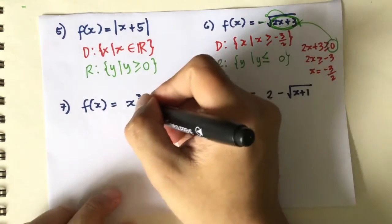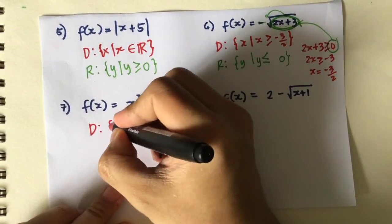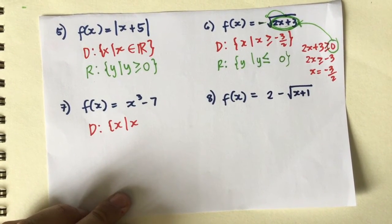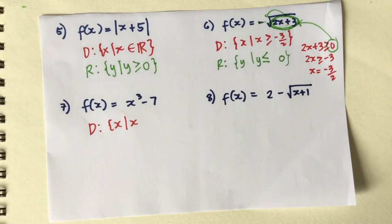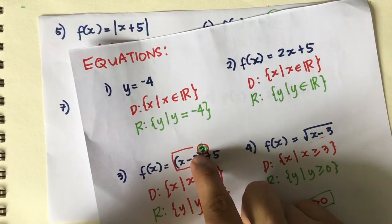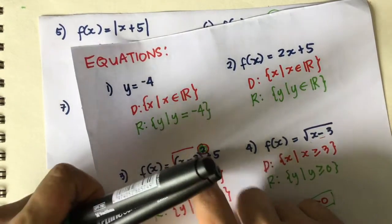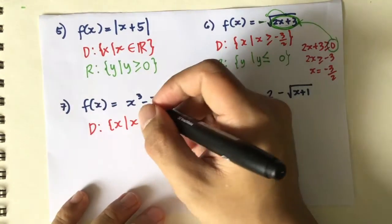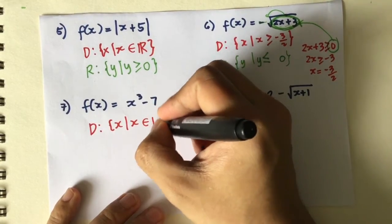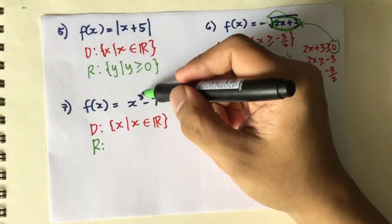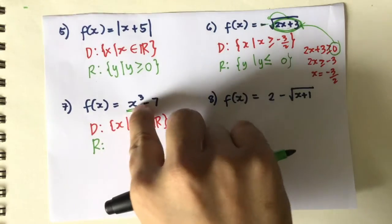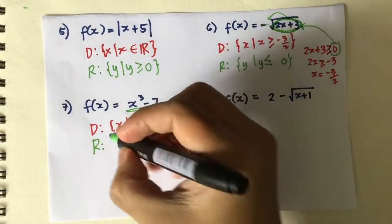Number 7 is x cubed minus 7. The first question: are you allowed to use any values of x? With x cubed, if you replace x with a negative number the result is negative, and with a positive number the result is positive — unlike the square root, which is limited to positive values. Since it's a cube, there's no limitation on the domain, so we can use any values of x.